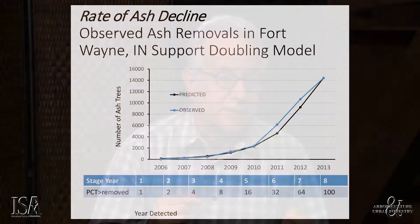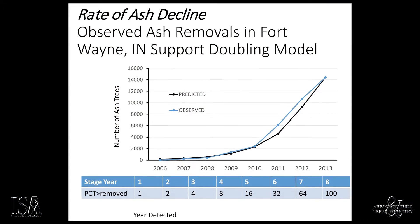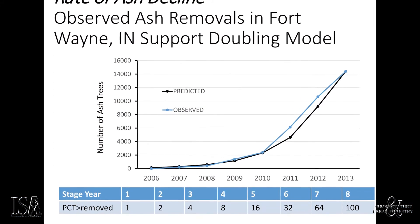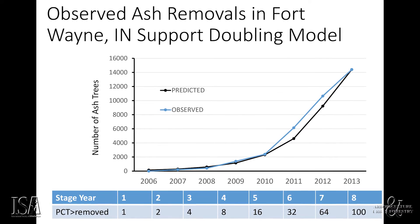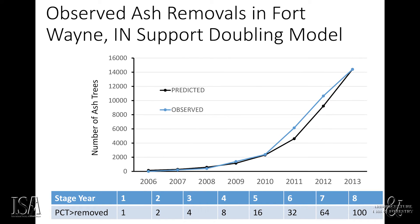We think the decline of an ash forest can be best described by a doubling model. In other words, the number of trees affected by emerald ash borer in a given year could be predicted by doubling the percentage of affected trees in the prior year. Starting with 1% of the trees in year 1, we could double this amount until year 8 when 100% of the trees were affected. We found this doubling model could accurately predict the rate at which 14,000 trees had to be removed from the streets of Fort Wayne due to damage from emerald ash borer.